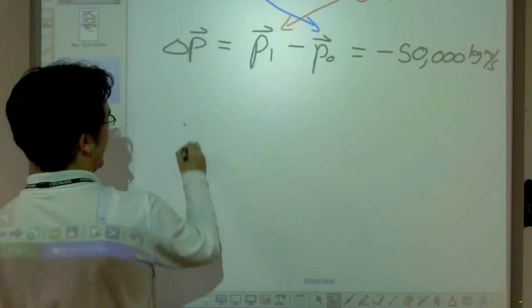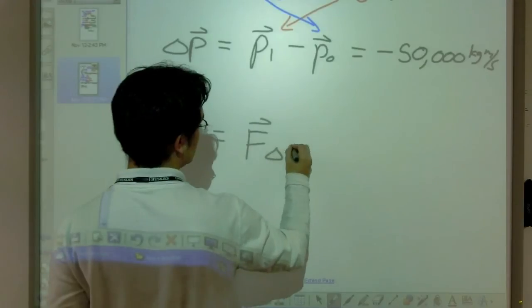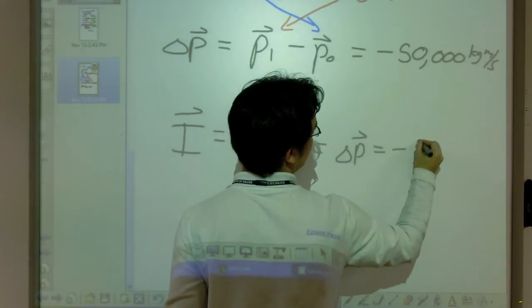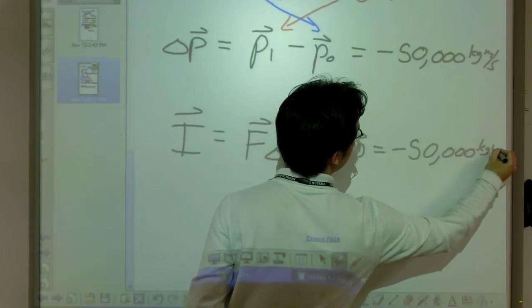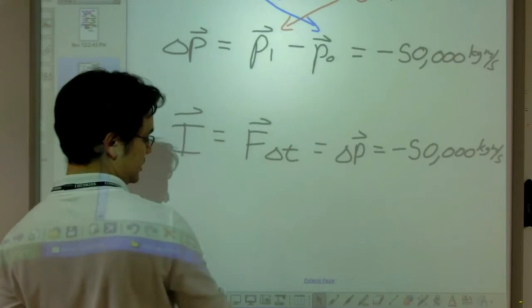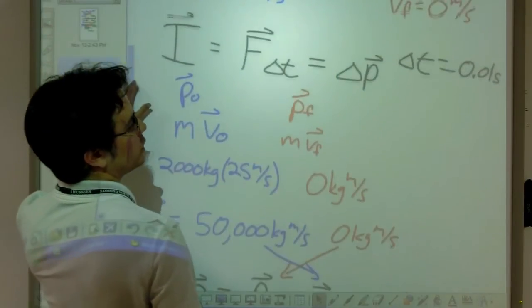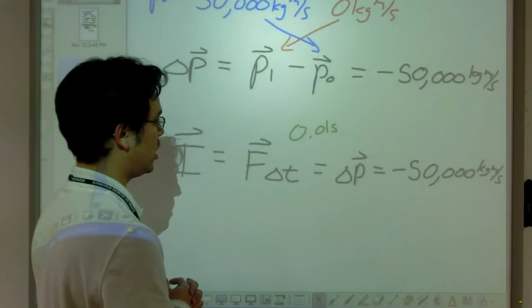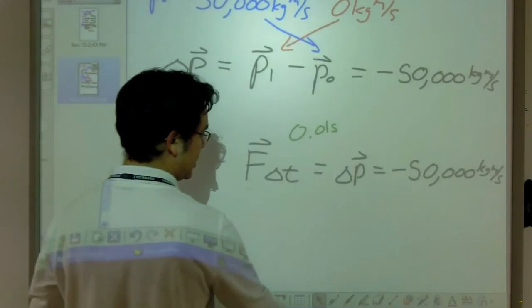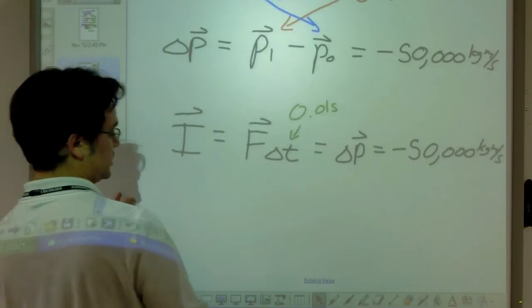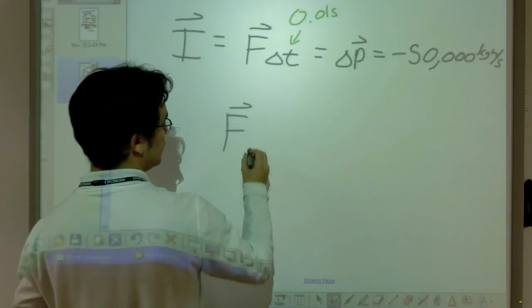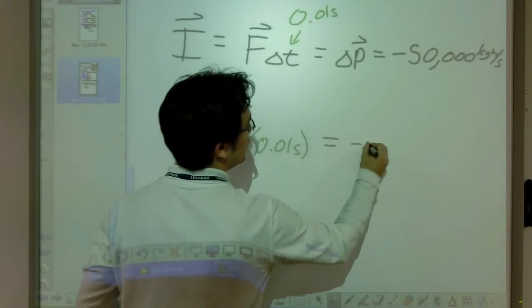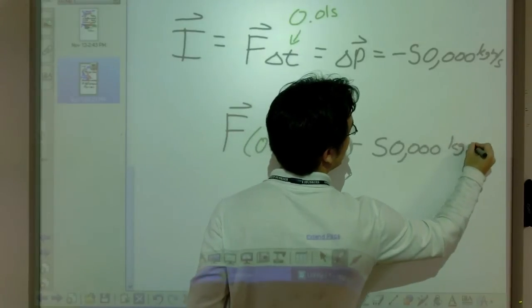And we know from impulse that our impulse, which equals our force times delta T, equals delta P. In this case, that's going to mean that it equals negative 50,000 kilogram meter per second. Well, I know my delta T. In this case, we said that it's kind of an old school car, so no crumple zones. So we're going to have something that I've surmised to be on the order of 0.01 seconds. That's assuming that the actual amount of crushing of the car is on the order of 10 centimeters or so. That's just a rough estimate. So we've got our force times 0.01 seconds, the time it takes for the collision, is equal to negative 50,000 kilogram meter per second.